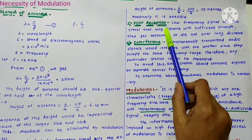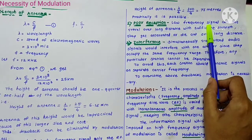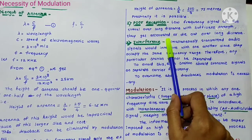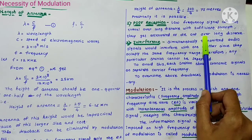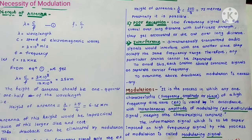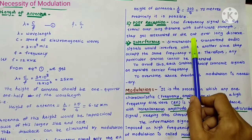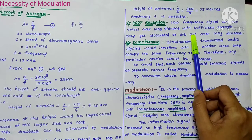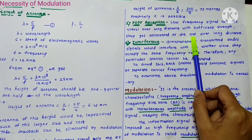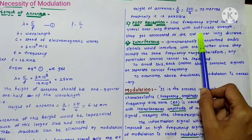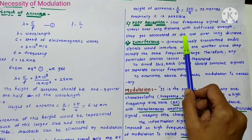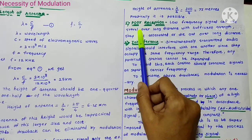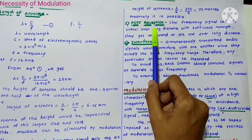The second reason is poor reception. Low-frequency signals cannot travel over long distances — they get attenuated or die out. At the radio receiver end, the strength of the signal becomes very weak. The voltage at the antenna is very small, about nanovolts, which is not suitable to get the desired sound level. This is known as poor reception, and modulation is used to overcome this drawback.